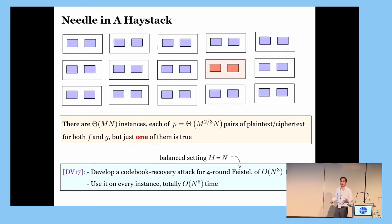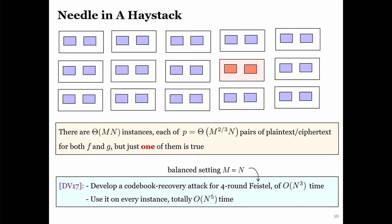It's instructive to see how DV managed to resolve this. But remember that they only consider the balanced setting where M is equal to N. So, they first developed a codebook recovery attack on 4-round Feistel with time N-cubed. Then, they used that on every instance. So, if we can recover the codebook on a particular instance, that must be a true instance. So, we are done. But if we fail to recover codebook on some instance, so that is probably a false instance. Just reject it. So, because there are N-squared instances, and each needs N-cubed time, totally, you would need N-to-the-fifth running time. So, that is expensive. How can we do better?